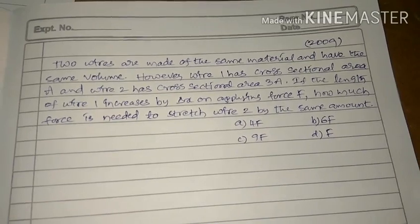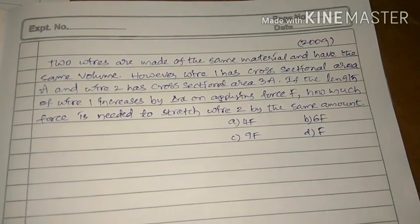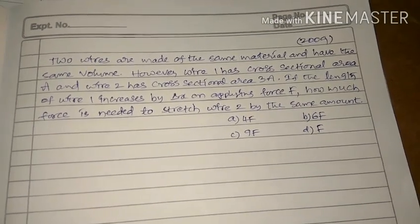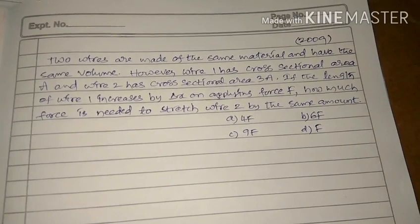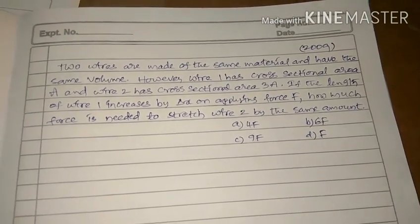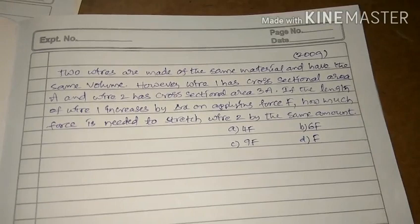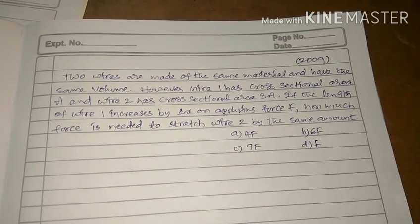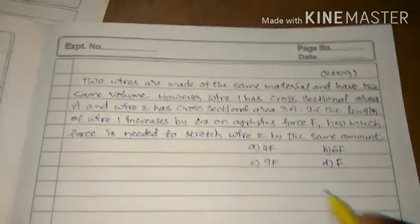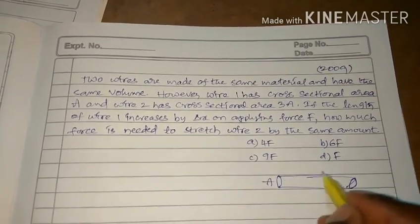The question asked in 2009: two wires are made of the same material and have the same volume. Wire 1 has cross-sectional area A and length L; wire 2 has cross-sectional area 3A. If the length of wire 1 increases by Δx on applying force F, how much force is needed to stretch wire 2 by the same amount? Since volume is the same, if area is 3A, the length of wire 2 is L/3.